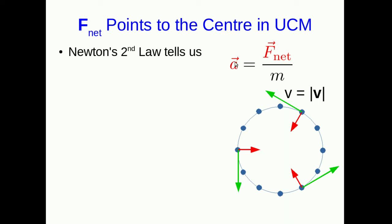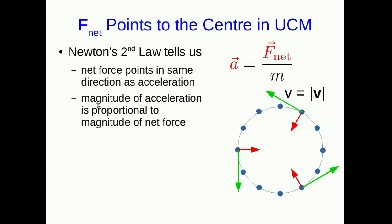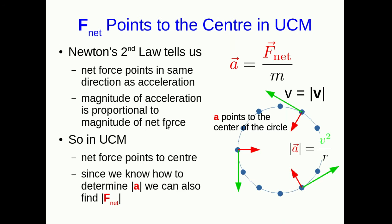Newton's second law tells us A is F net over M, and so the net force always points in the same direction as the acceleration, and the magnitude of the acceleration is proportional to the magnitude of the net force. Well in uniform circular motion we know that the acceleration always points to the center of the circle, and so F net must as well.